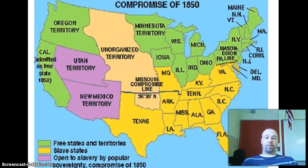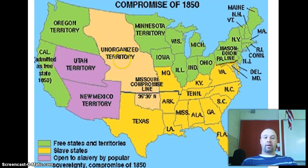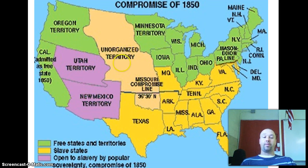Here is the Compromise of 1850. California becomes a free state, and other areas — New Mexico, Utah, and this unorganized territory that will become Kansas and Nebraska — are going to be open to popular sovereignty, which is the idea that the people in these territories can vote whether they want to have slavery or not.